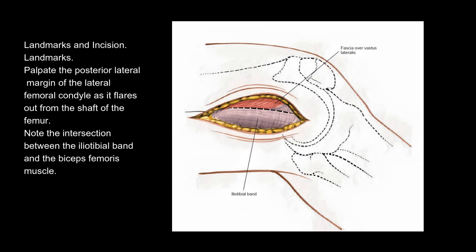Landmarks: palpate the posterior lateral margin of the lateral femoral condyle as it flares out from the shaft of the femur. Note the intersection between the iliotibial band and the biceps femoris muscle.